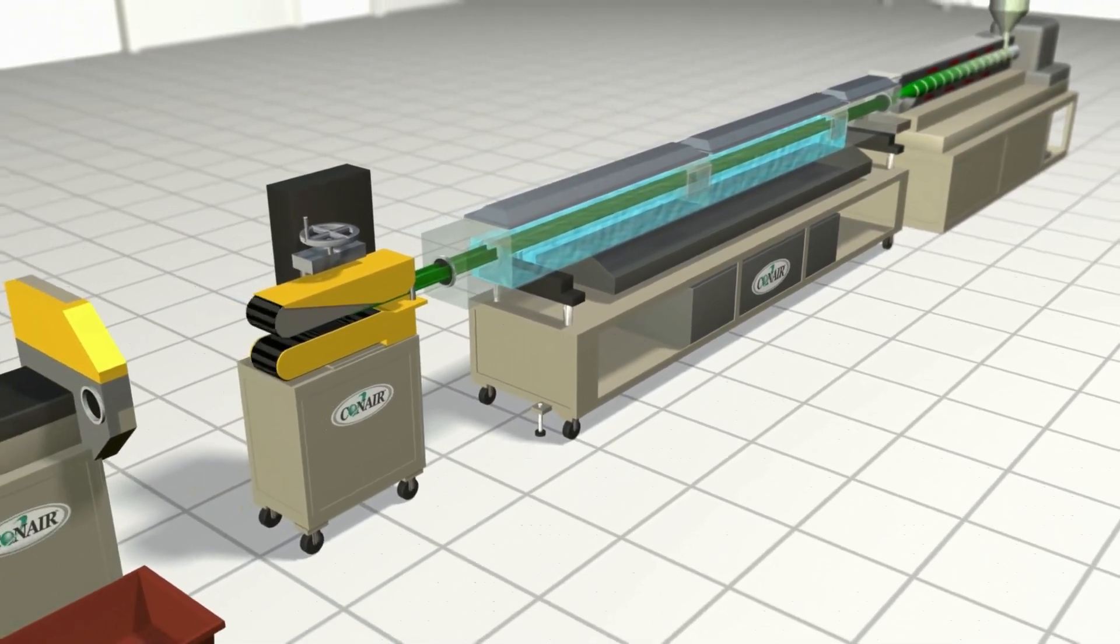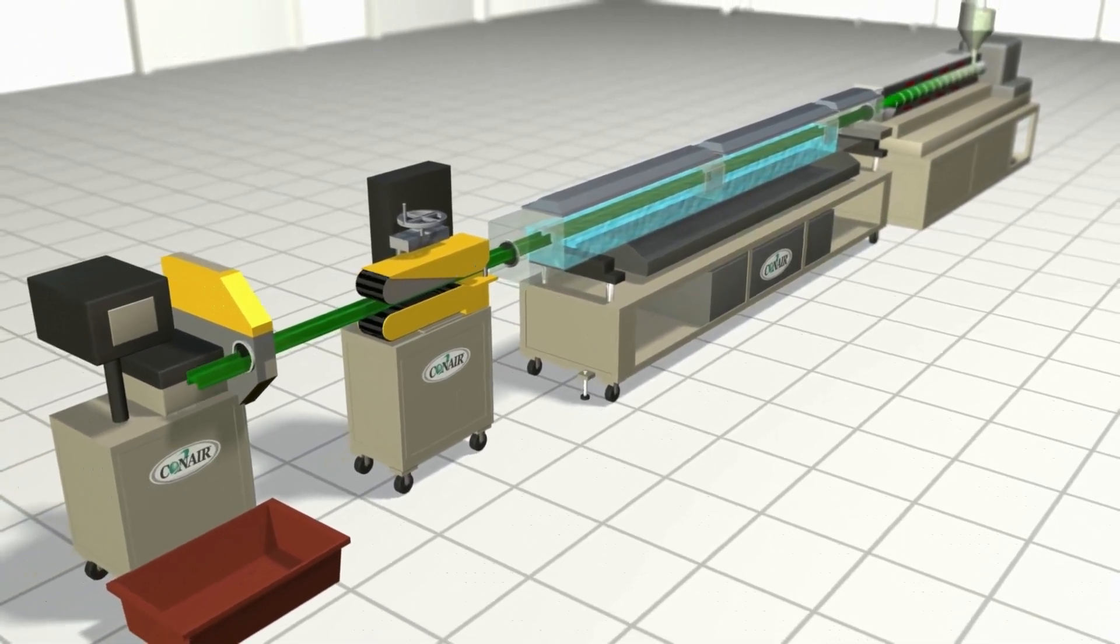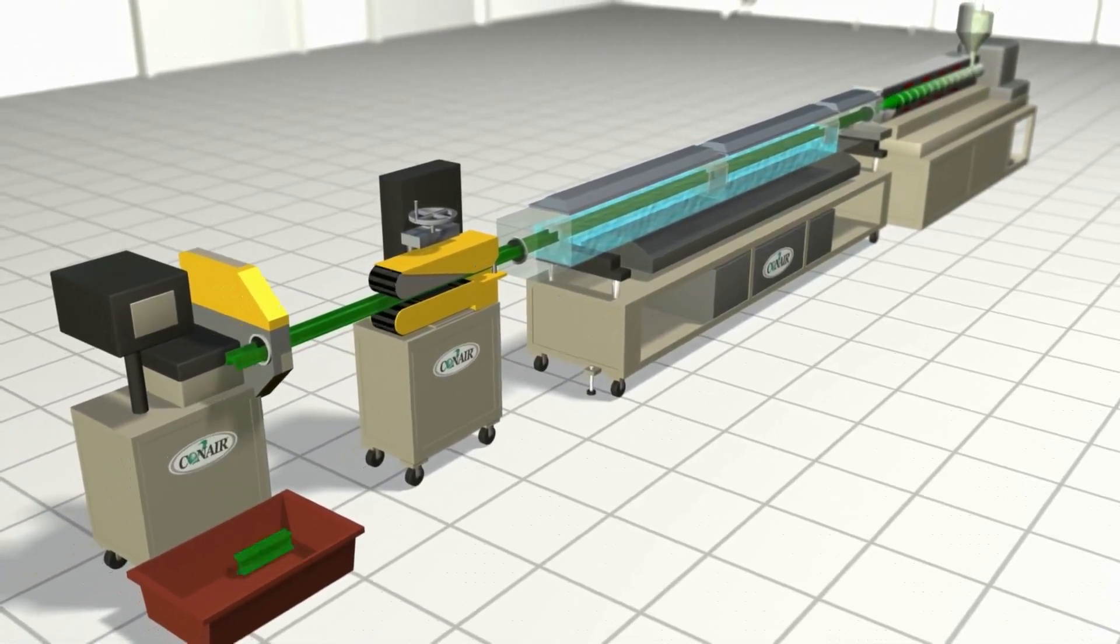Belts or cleated pullers apply smooth tension on the product and keep it moving in pace with the extruder. A cutter or saw creates the final product length, or a winder creates spools of the final product.